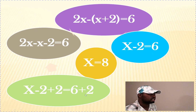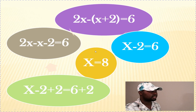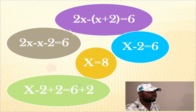Let's go back and check: if x is 8, then 2 times 8 equals 16. And 8 plus 2 equals 10. So 16 minus 10 equals 6. That matches, so our answer is correct.